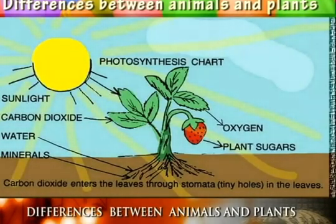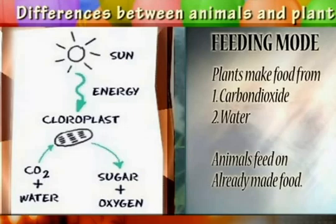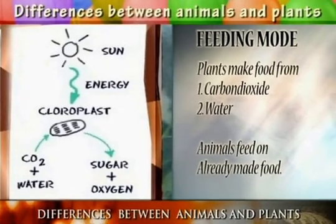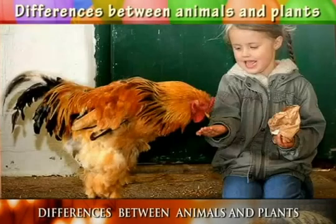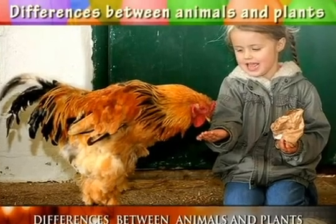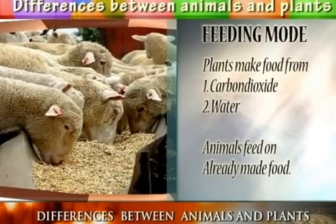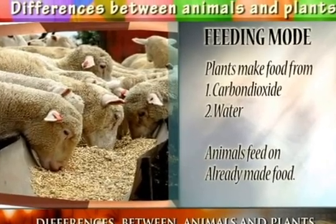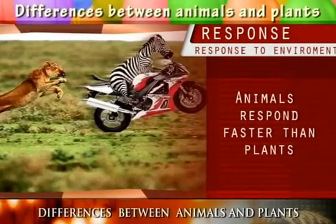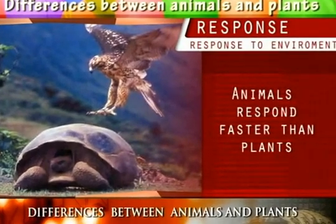If you look at the mode of feeding, plants have the ability to manufacture their own food through photosynthesis, using carbon dioxide and sunlight. Whereas animals lack this ability of making their own food, meaning that they depend on already manufactured foods.